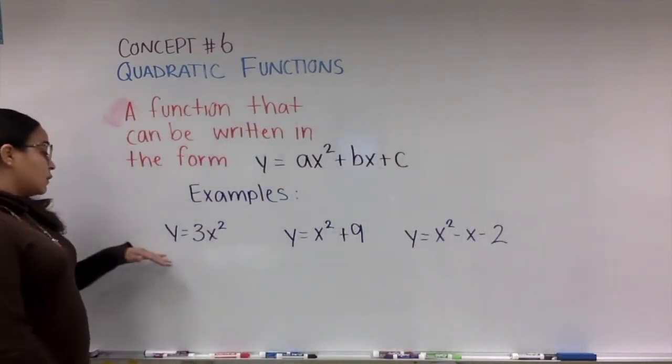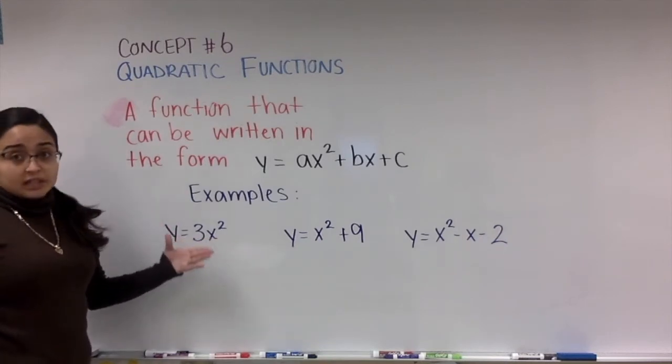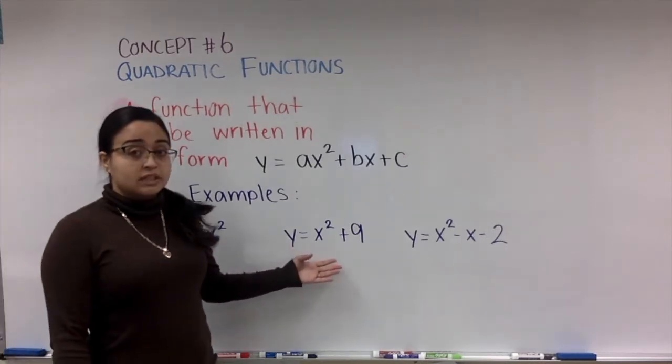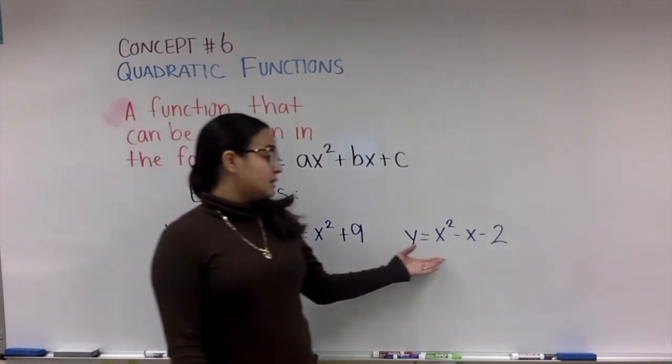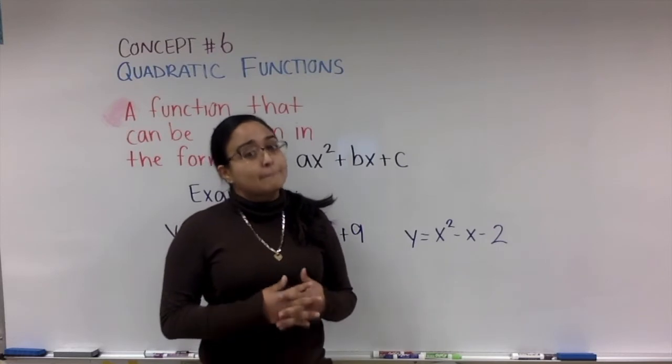Here we have some examples of what would be considered a quadratic function. So here we have y equals 3x squared, that is a form of a quadratic function. Y equals x squared plus 9 is a quadratic function, and y equals x squared minus x minus 2.